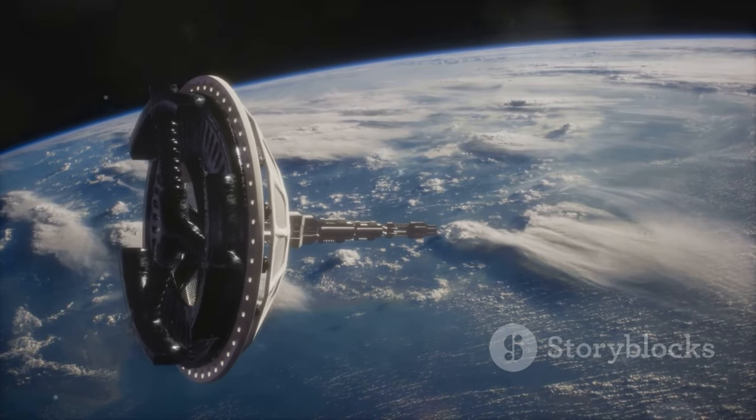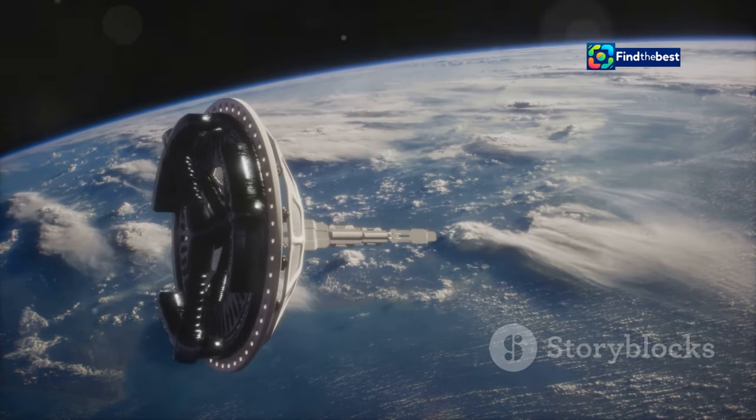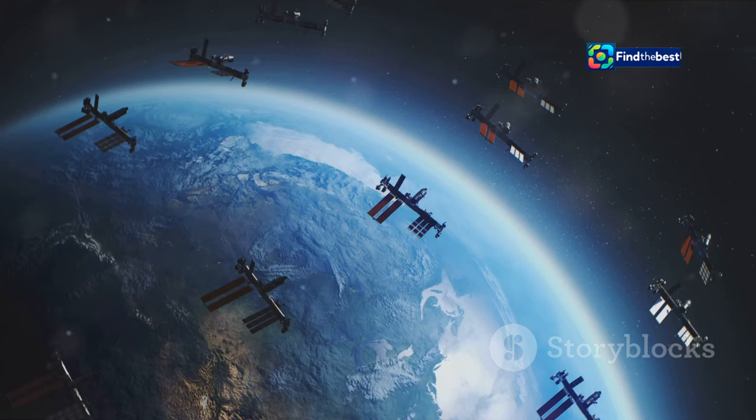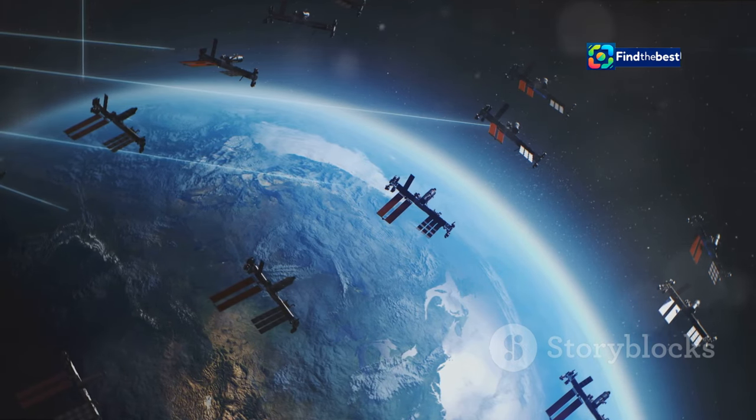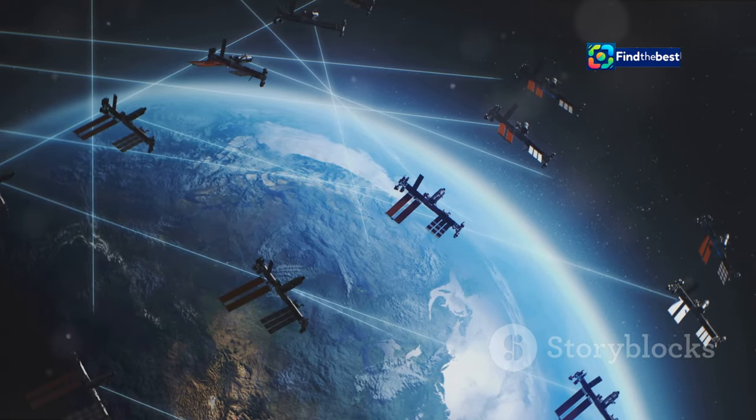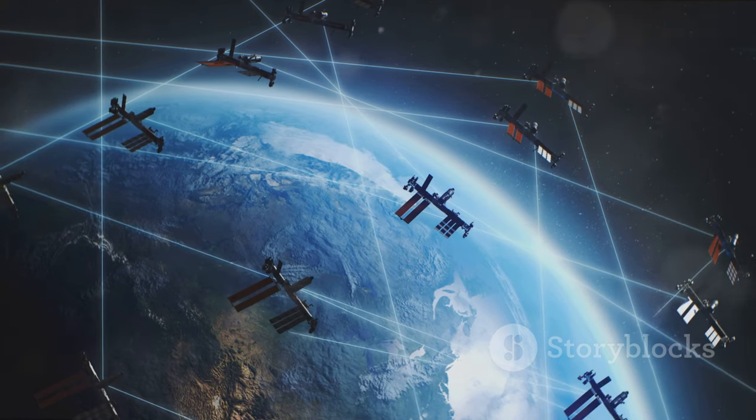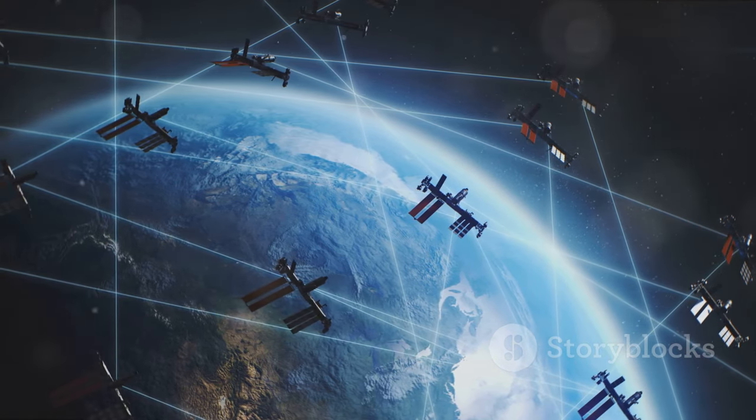In addition to ground-based observatories, scientists also rely on data from satellites orbiting Earth. Satellites like the European Space Agency's SWARM mission provide a global view of the magnetic field, allowing scientists to track its changes with high precision.